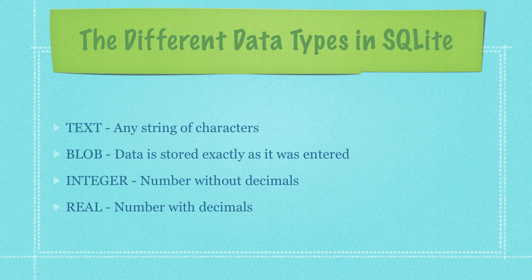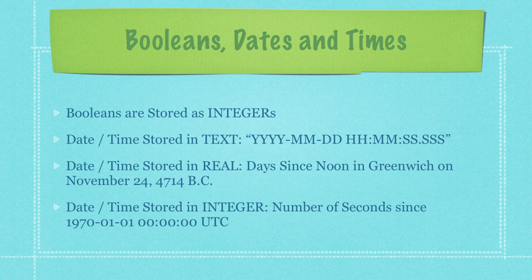One thing that seems to really be confusing people about SQLite is how it handles data types, because it is kind of strange. There are basically four types of data: text, blobs, integers, and reals. Text is just a string of characters. A blob is data stored exactly as it is entered. Integers are numbers without decimals and reals are numbers with decimals. If you want to store a boolean inside of SQLite it's actually going to be stored as an integer, and dates and times can be stored as text, real, or integer formats.